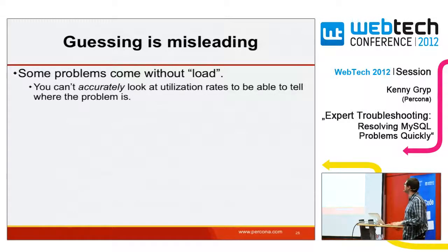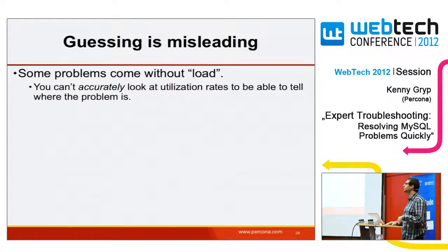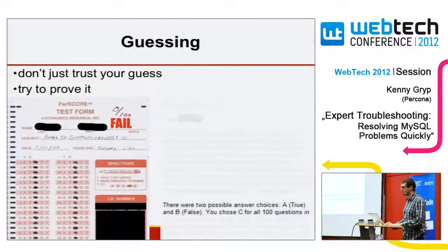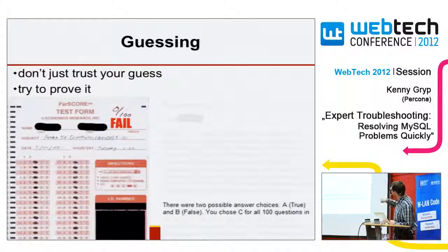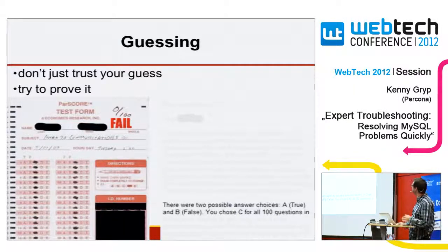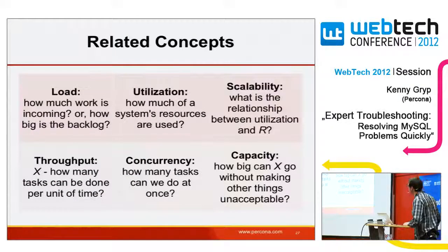Some problems don't come with load — utilization rates don't necessarily show you there is a problem. We're still guessing. How can we get more information? How can we get insight to prove this? Guessing is like filling in C on a test when the introduction said only A or B should be filled in.